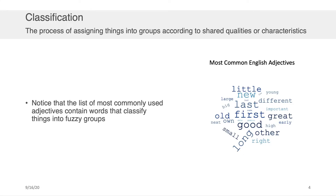So when I say classification, what do I mean by that? Well, classification is the process of assigning a continuous set of things in our world into groups according to some shared qualities or characteristics. You may recall in one of the previous lectures that we showed an illustration, also shown here on the right-hand side, of some of the most common English adjectives: little, new, last, first, different, great, and so on.